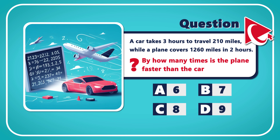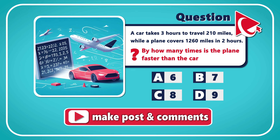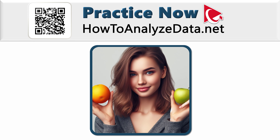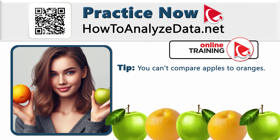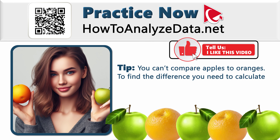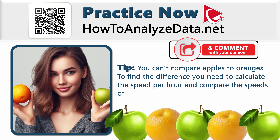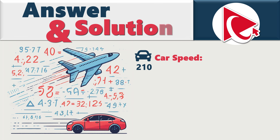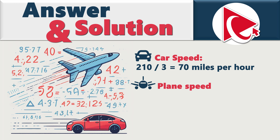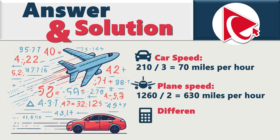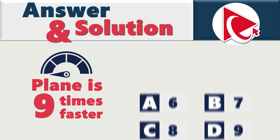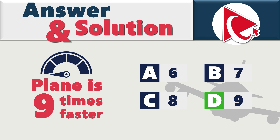If you have a better way to solve it, please post in comments so we can all learn. If you know a little about the origins of this joke, you know you can't compare apples and oranges. So to find the difference, we need to calculate the speed per hour and compare. The car speed is 210 divided by 3, which equals 70 miles per hour. The plane speed is 1,260 divided by 2, which equals 630 miles per hour. The difference is 630 divided by 70, which equals 9 — so the plane is 9 times faster. The correct answer is choice D, 9.